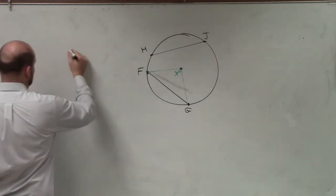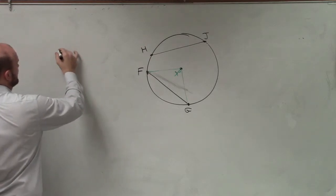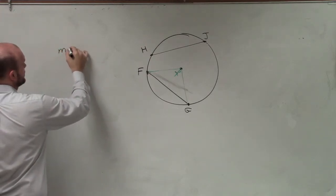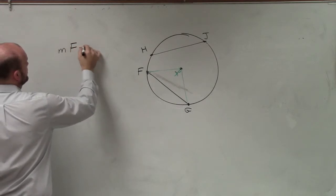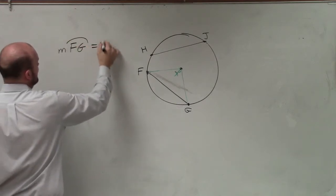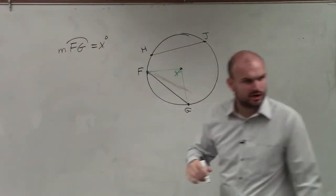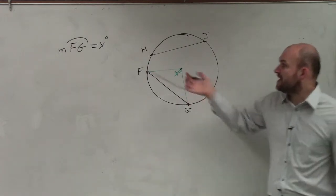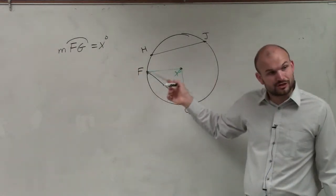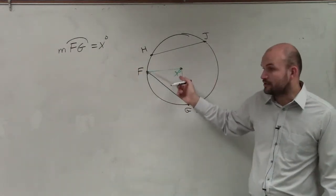So we said the measure of arc FG is equal to x degrees. Do you guys remember we did that in our notes? The measure of that arc is equal to that x degrees, the angle that it creates.